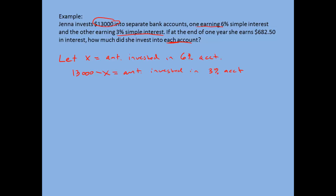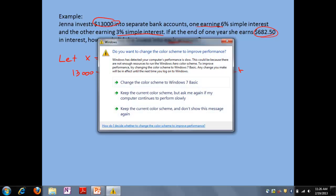So those are the two things we're looking for. It's very important that you write this as 13,000 minus X — it's the total minus the amount given to the first account. So if I gave X to the 6% account, 13,000 minus X will be what's left over for the 3% account. What we really want to find is the amount of interest earned for the 6% account and the 3% account, and add those together to equal the total interest earned, which is $682.50.